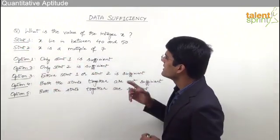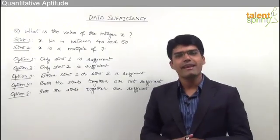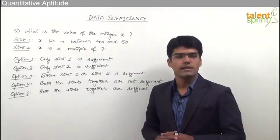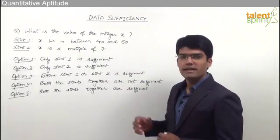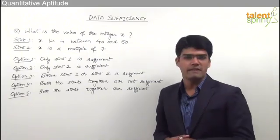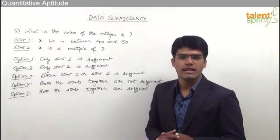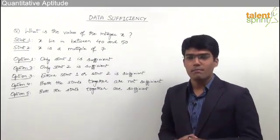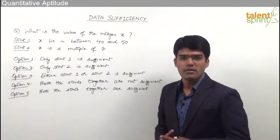The question here is: what is the value of the integer x? So we need to find out the value of the integer x. The first statement is x lies between 40 and 50, and the second statement is x is a multiple of 7.